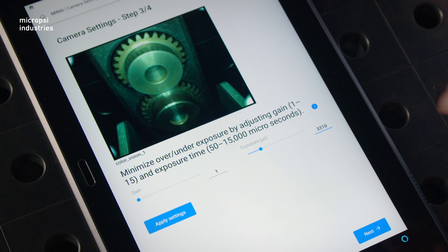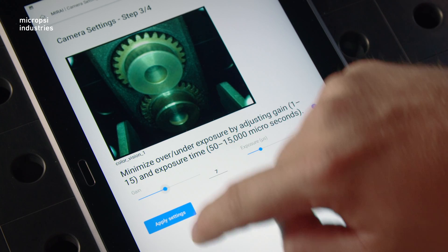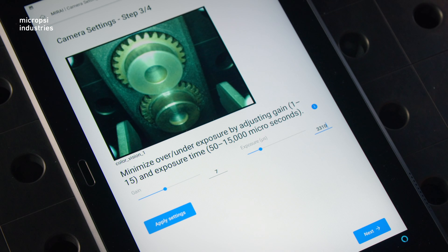Finally, we have gain. By increasing the gain, you amplify the light that the camera has recorded. This can brighten up your image, but it can also make it noisy, meaning the image contains less information.